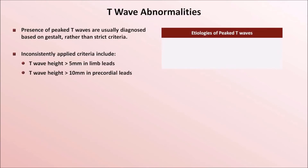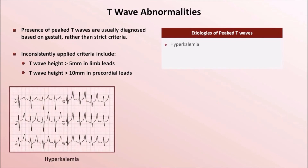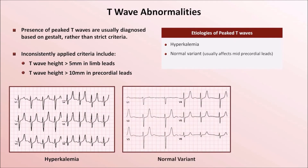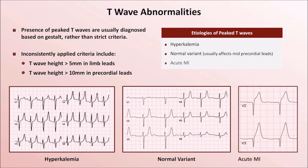Etiologies of peaked T waves include hyperkalemia, a normal variant which usually affects just the mid-precordial leads, and rarely an acute MI — in which case they are called hyperacute T waves and can immediately precede the development of ST elevations in those same leads.